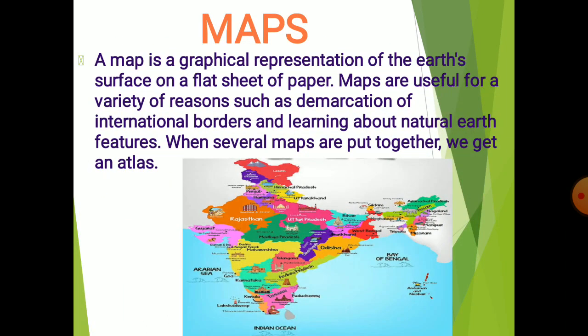A map is a graphical representation of the earth's surface on a flat sheet of paper. Maps are useful for a variety of reasons, such as demarcation of international borders and learning about natural earth features. When several maps are put together, we get an atlas.